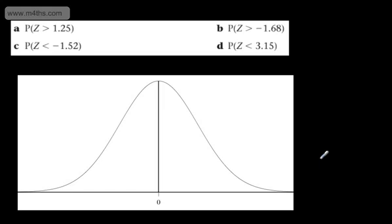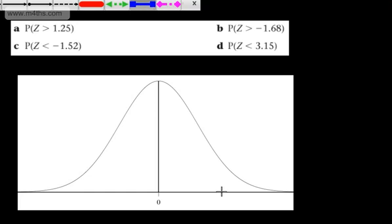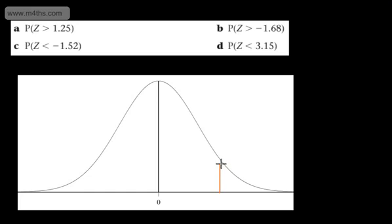This is now our second video looking at finding probabilities using the standard normal distribution. In the first question, we're asked to find the probability that Z is greater than 1.25. So let's put a line up here, and we'll place it just here. So we want the probability Z is greater than 1.25. That is given as the area to the right of this line.